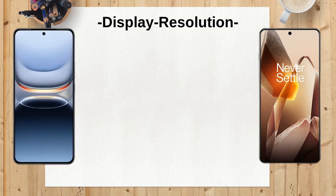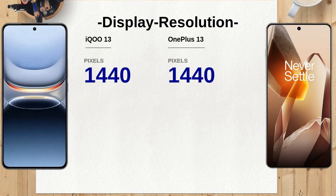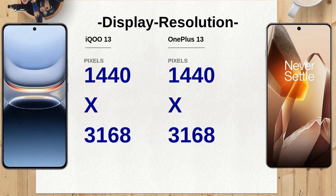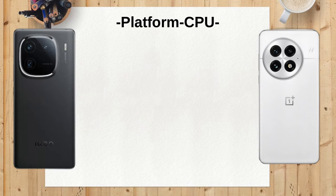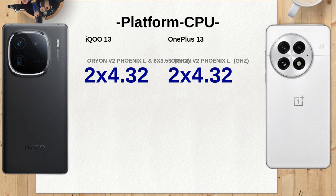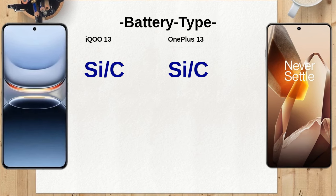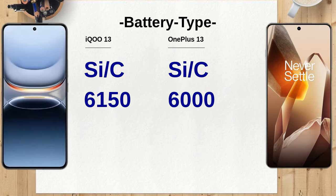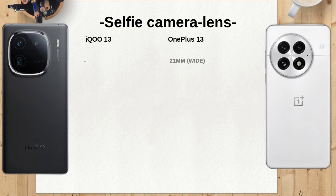The iQO13 features a versatile triple-camera setup with a 50-megapixel wide lens, a 50-megapixel telephoto lens with 2x optical zoom, and a 50-megapixel ultrawide lens. In comparison, the OnePlus 13 also sports a 50-megapixel wide lens, but it includes a more advanced 50-megapixel periscope telephoto lens with 3x optical zoom. This gives the OnePlus 13 an edge in zoom capabilities, making it ideal for capturing distant subjects.